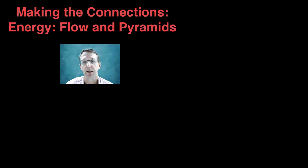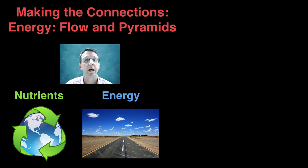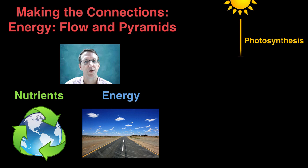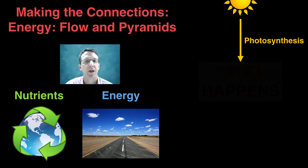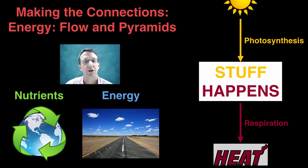Now nutrients are limited and thus need to be constantly recycled. However, energy travels on a one-way highway through the ecosystems and can be represented a little bit like this where energy enters the ecosystem through the process of photosynthesis. A whole bunch of stuff happens and then all the energy is finally released as heat via cellular respiration. So in this video I want to spend some time diving deep into the stuff that happens box.